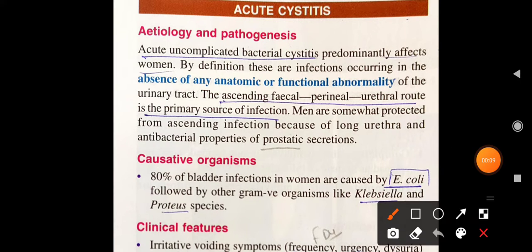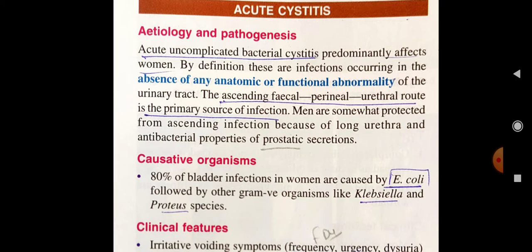When you have this topic, you can write a definition here. These are infections that occur in the absence of any anatomic or functional abnormality of the urinary tract. This is Acute Uncomplicated Bacterial Cystitis, predominantly affecting women. Women are more affected than men because the urinary tract is short in women, and prostatic secretions have anti-bacterial properties in men.